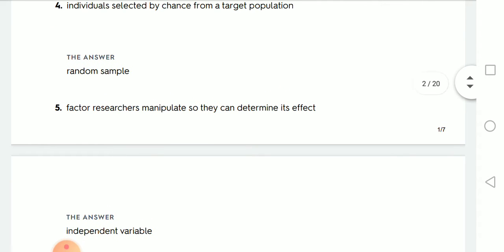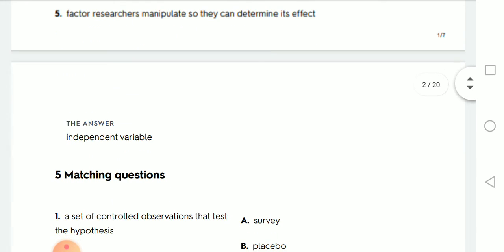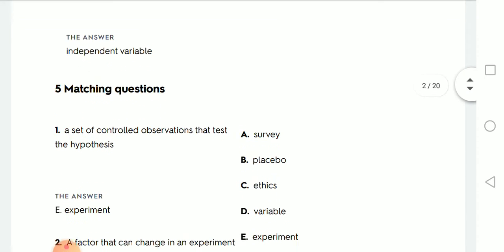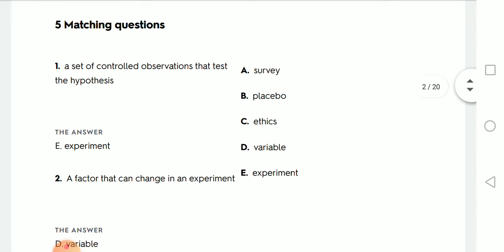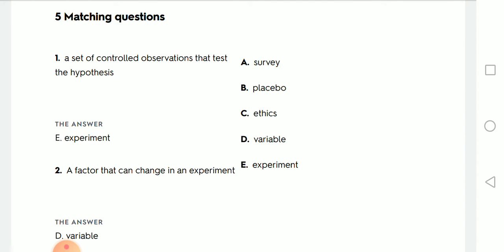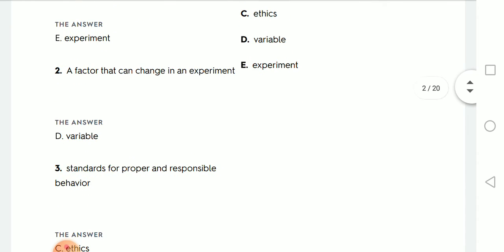Factors researchers manipulate so they can determine its effect, here the independent variable. And this is the matching, a set of controlled observation that test the hypothesis. So when I have a hypothesis, this becomes after this some observations, controlled observations to test my hypothesis is correct or not. So this is called what? The experiment that I do. Factor that can change in an experiment, this is called variable.